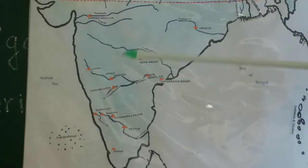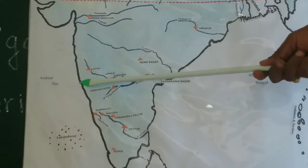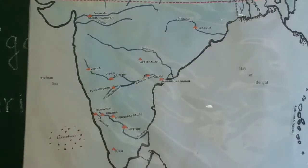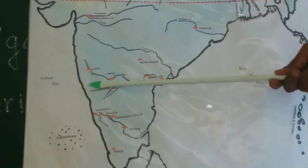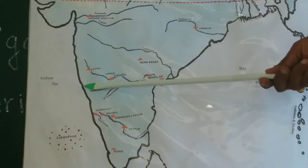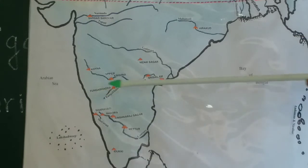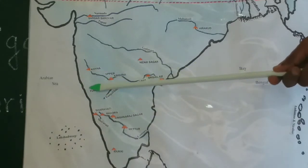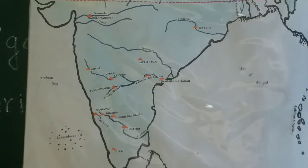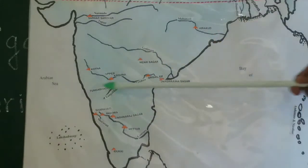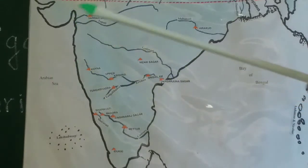Then you have the Mandovi river, which flows near Goa. The city of Panaji is on the banks of the Mandovi river. Then you have the Zuari, which also flows in Goa. In North Karnataka you have the Bedti river and Sharavati river. Then you have the Kali river — a mighty though short river that joins the Arabian Sea taking birth in the western hills.